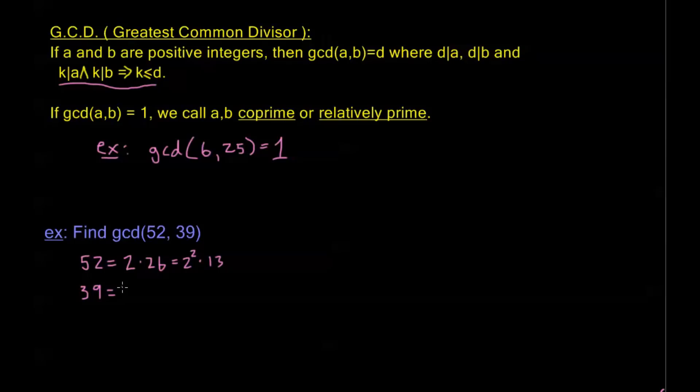39 is equal to 3 times 13, both 3 and 13 are prime, so we're done.